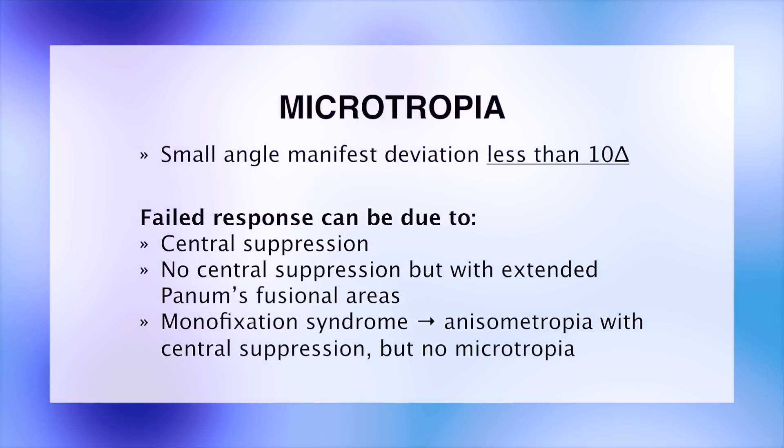A failed response means that a patient has one of the following: a microtropia with central suppression, microtropia with no central suppression but with extended fusional areas, or monofixation syndrome which is an isometropia with central suppression but no microtropia.